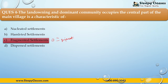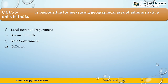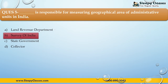The next question is: Who is responsible for measuring the geographical area of administrative units in India? First, land revenue department; Second, Survey of India; Third, state government; Fourth, collector. The correct answer is option B — Survey of India. The land revenue department handles land revenue and divisions; the state government oversees the land revenue department; and the collector is part of the land revenue department. Survey of India is responsible for measuring geographical areas — if you have read the chapter, you will know this directly.